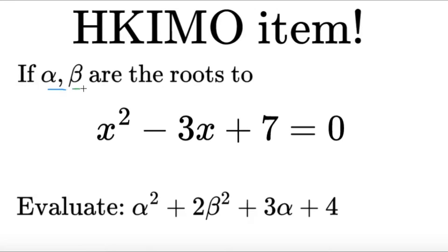If alpha and beta are the roots to x squared minus 3x plus 7 equals 0, evaluate the following expression: alpha squared plus 2 beta squared plus 3 alpha plus 4.